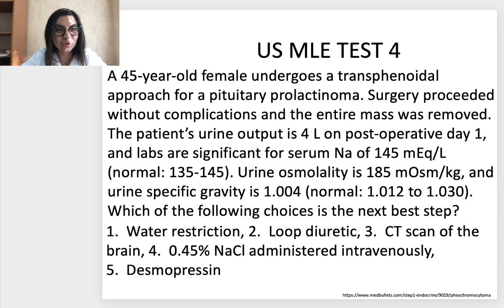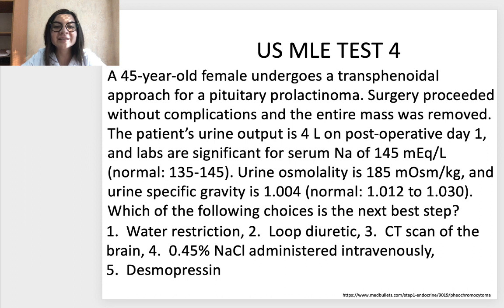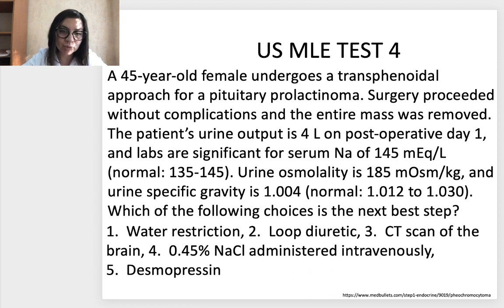One more USMLE test for you today. A 45-year-old female undergoes a transsphenoidal approach for pituitary prolactinoma. Surgery proceeds without complications and the entire mass is removed. The patient's urine output is 4 liters on post-operative day one. Labs show serum sodium 145 (normal less than 145), urine osmolarity 185, and urine specific gravity 1.004. Which of the following is the next best step? Options: water restriction; loop diuretic; CT scan of the brain; 0.45% sodium chloride administered IV; desmopressin.